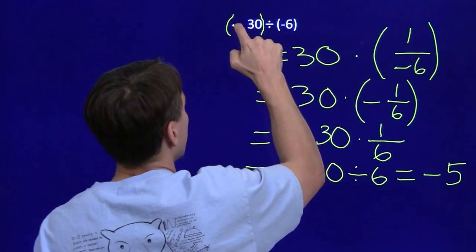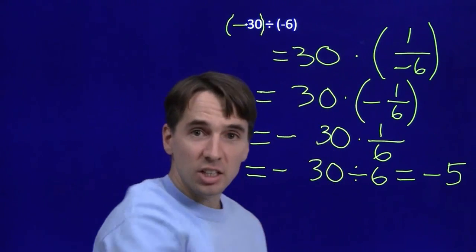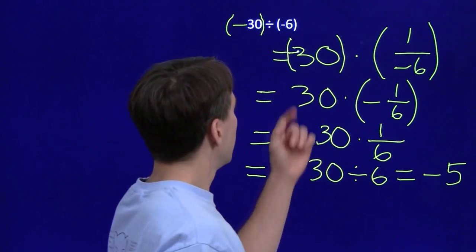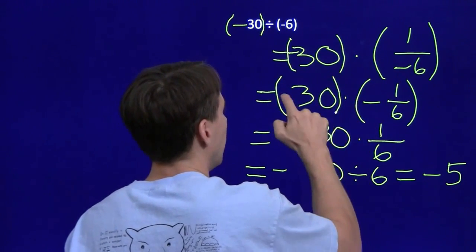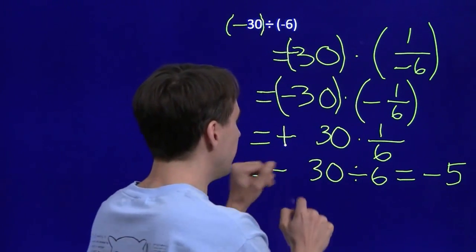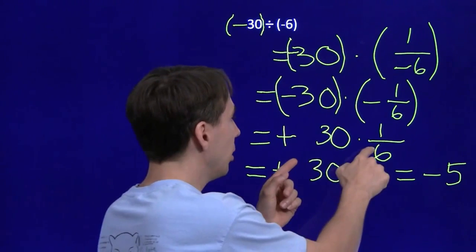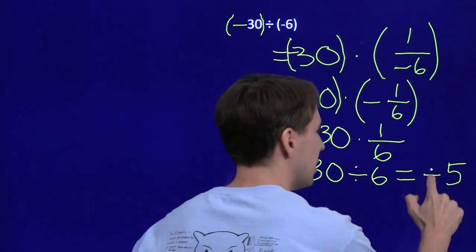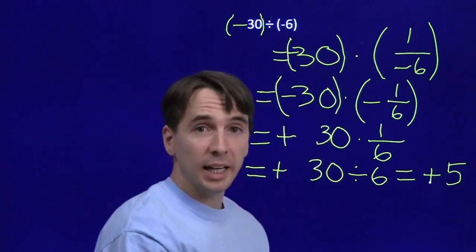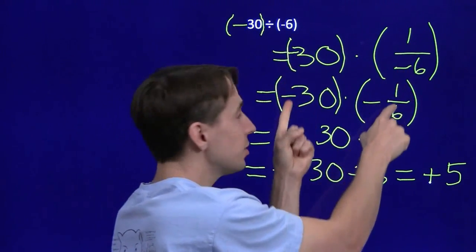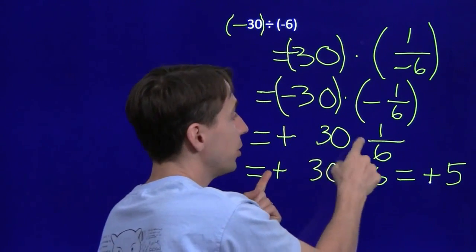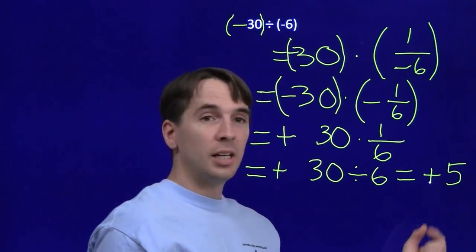I'm going to cheat a little bit and pretend our starting number was negative, and see how that changes everything. Well, that would mean this is also negative. So that's negative, and so this is negative as well. So negative times a negative, that's positive. So this is positive, this is positive. Step stays the same, 30 times 1 over 6, definition of division. 30 divided by 6 makes this positive as well. So negative divided by a negative, reciprocal of negative 6 is negative of 1 over 6. Negative times a negative is a positive. And positive 30 times 1 over 6 is 30 divided by 6, leaves us positive 5.